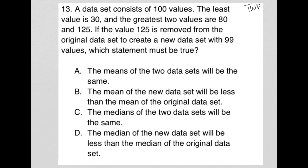Okay, so the smallest... so there's 100 values. The smallest value is 30, right? So I have 30, and then of course I have basically 99 more values.